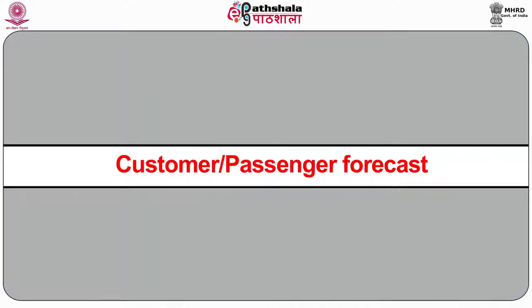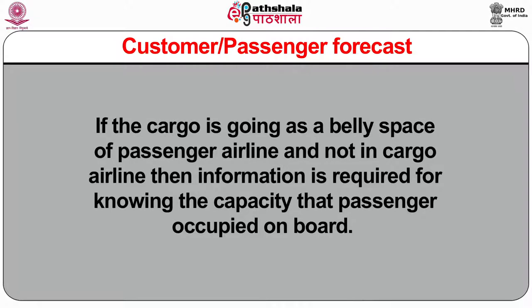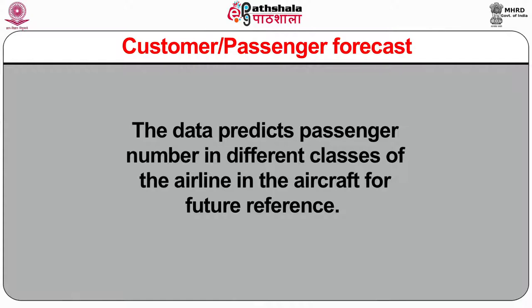Customer or passenger forecast: if cargo is going as belly space of a passenger airline, information is required about the capacity occupied by passengers on board. The data predicts passenger numbers in different classes of the aircraft for future reference. Such predictions are used for calculating expected weight of cargo and passengers on board, the volume of passenger baggage and cargo containers at the time of departure in the belly area and main deck of cargo, and thus the total capacity of cargo airlines can be calculated. Passenger forecasts are available on the passenger revenue management system.